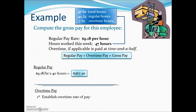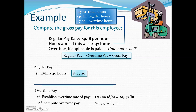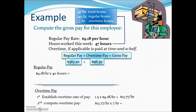Overtime is time and a half, so we take the normal regular pay and multiply it by 1.5. Every hour of overtime this worker would be receiving $13.77 per hour. Seven hours of overtime at time and a half results in an additional $96.39. Adding the regular pay and overtime together gives us the gross pay for this week of work.